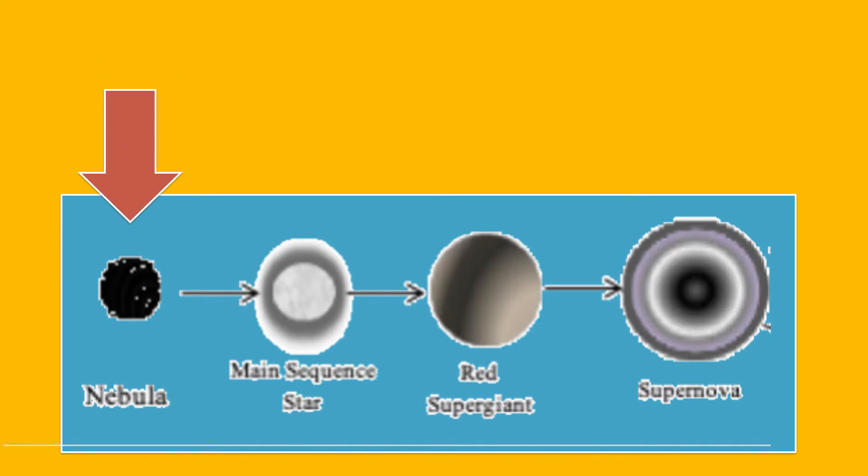Over time, the hydrogen in the nebula is pulled together by its own cavity, heats up, and forms a main sequence star.